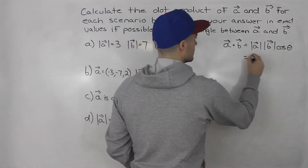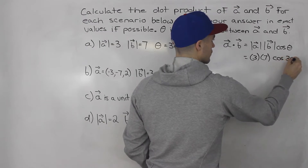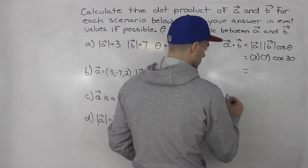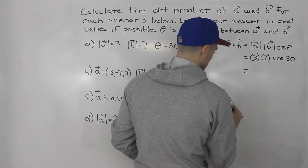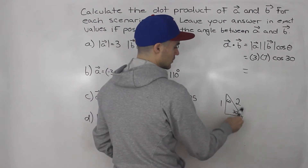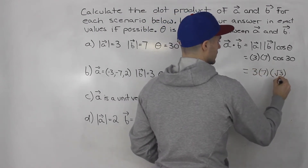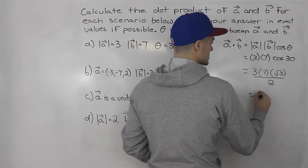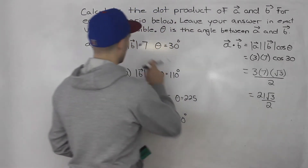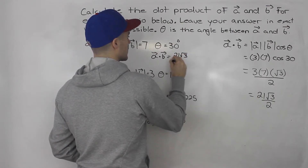The magnitude of A is 3, magnitude of B is 7, and then we've got the angle 30 degrees, so cos of 30. We're supposed to leave our answer in exact values. Notice that 30 is a special angle. From the special triangle, we have 30, root 3, 1, 2 — so cos of 30 is the adjacent over the hypotenuse, which is root 3 over 2. So it's 3 times 7 times root 3 over 2. Multiplying the 3 and 7 gives us 21 root 3 over 2. So A dot B equals 21 root 3 over 2.